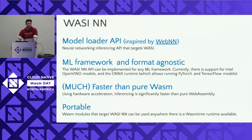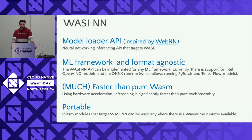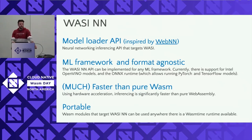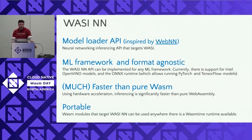This is where WasiNN comes in — the WASI neural network proposal. It's a way of allowing us to load a neural network model into a runtime and run inferencing on that model. It's framework and format agnostic, so if you have an implementation you can run it for PyTorch, TensorFlow, or any other machine learning framework. It's much faster than running inferencing in pure WebAssembly, and it's really portable — we'll see the same model and runtime run across Raspberry Pis, Intel CPUs, AMD, and GPUs as well.